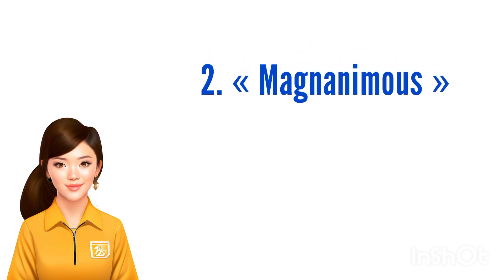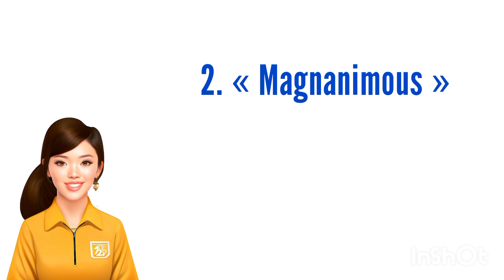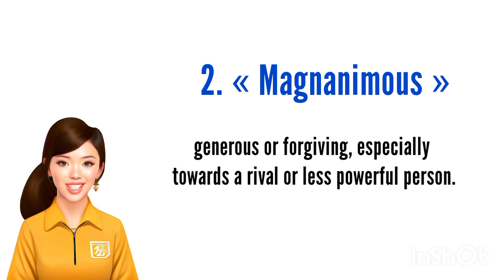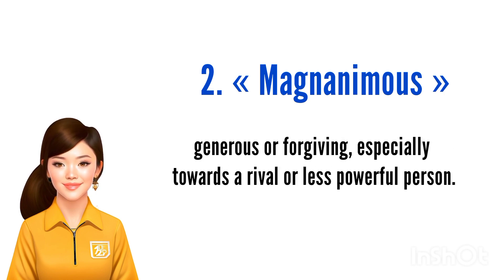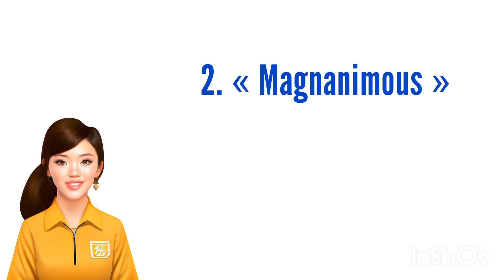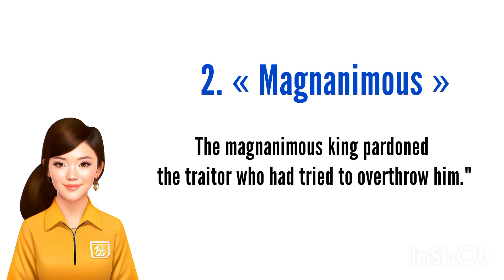The second word we will be learning is 'magnanimous.' It is an adjective that means generous or forgiving, especially towards a rival or less powerful person. For example, the magnanimous king pardoned the traitor who had tried to overthrow him.